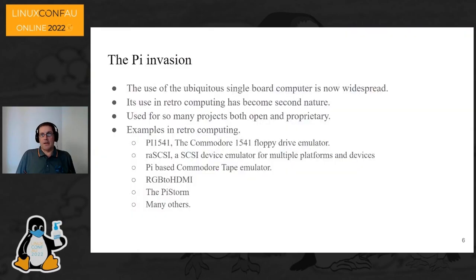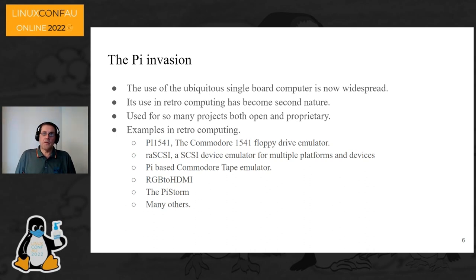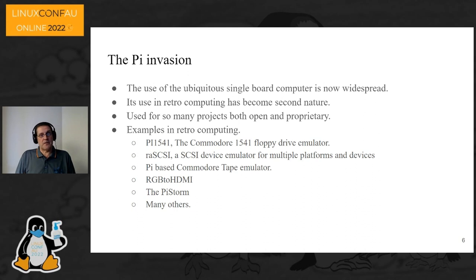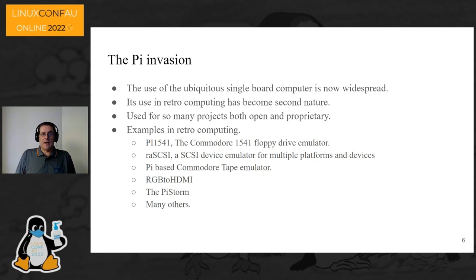Let me take a diversion and talk about the Raspberry Pi invasion of the retro computing community. One of the biggest issues with retro computing is the vanishingly scarce peripherals required to get some of these computers to work. The Pi has been used as the basis for a number of useful peripheral recreations — like the Pi 1541 emulating a Commodore 1541 floppy drive, the RaSCSI emulating various SCSI devices, and a Commodore tape emulator.